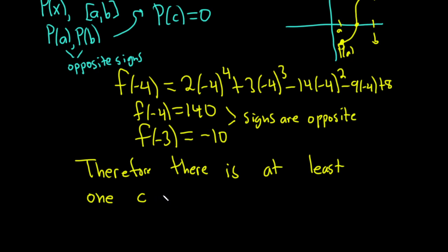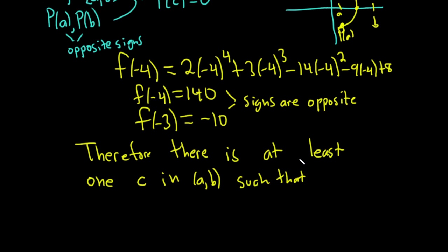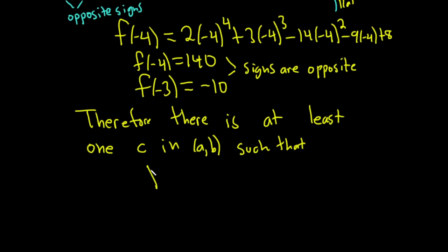In our interval, and our interval in this problem is a to b, such that p of c is equal to zero. And I think it's good to write stuff like this down.